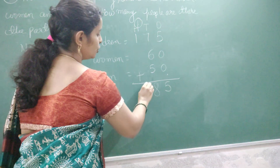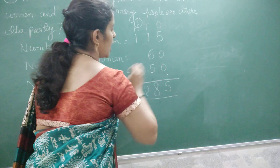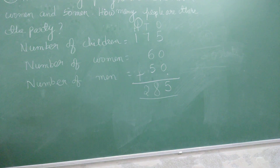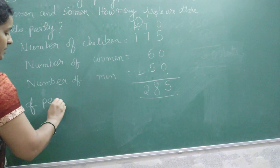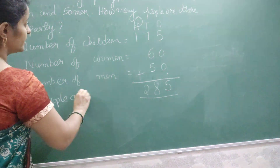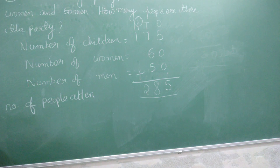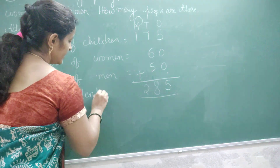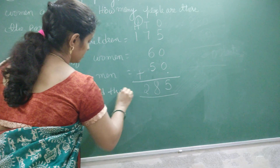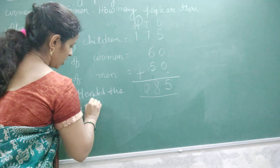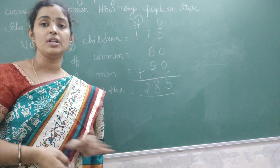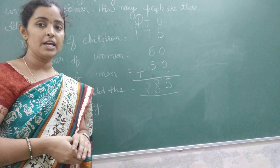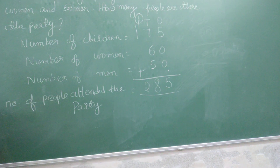So 1 plus 1 is 2. Total number of people who attended the party — that is 285 people attended the birthday party.